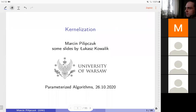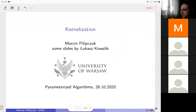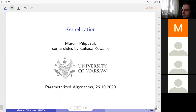Good afternoon and welcome to the second lecture on parameterized algorithms. Today the topic is kernelization, which is essentially pre-processing in some rigorous framework. We'll be observing that the notion of parameterized complexity — where every instance is accompanied by some parameter or integer that tries to measure how hard the instance is — is really a very good notion for pre-processing.